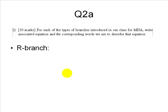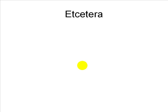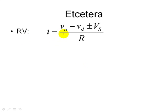The R branch. In that one, we said the current is voltage of the origin minus voltage of the destination of the current divided by the resistance of the branch. And for the other branches, for the RV branch, the current is voltage of the origin minus voltage of the destination, plus or minus the value of the source depending on whether it's helping or opposing the current divided by the resistance in the branch.